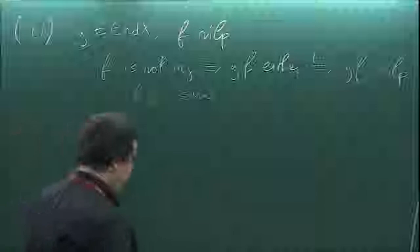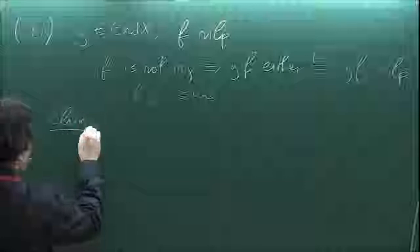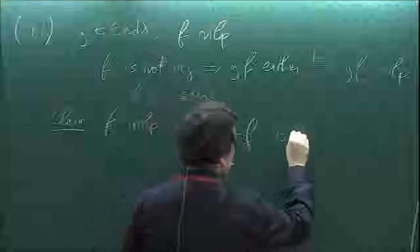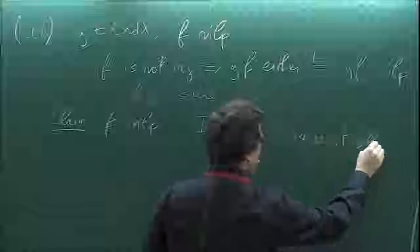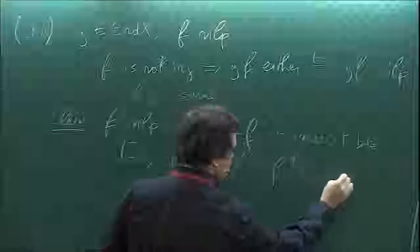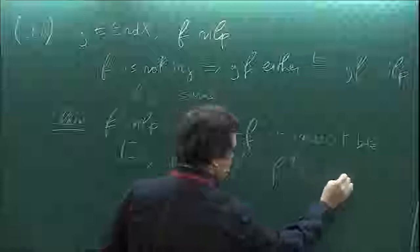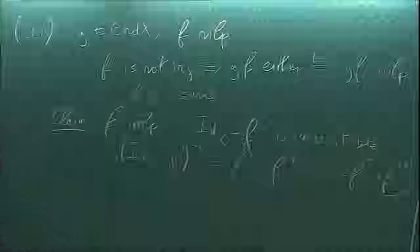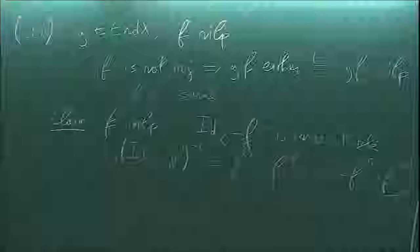The tricky part is proving stability under sums. I claim: if F is nilpotent, then the identity of X minus F is invertible. You did this at school — the inverse is just F^0 + F^1 + ... + F^n, and since F is nilpotent it stops at some point. This is just algebraic computation. Then: if G is invertible and F is nilpotent, then G minus F is invertible. Because G minus F equals G times (identity minus F·G^{-1}), and F·G^{-1} is nilpotent, so (identity minus F·G^{-1}) is invertible, and G is invertible.